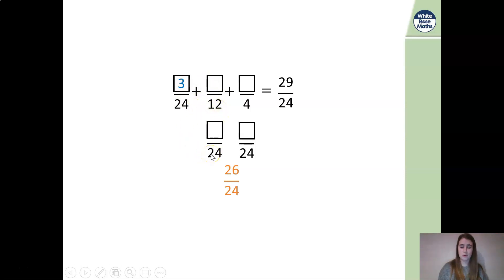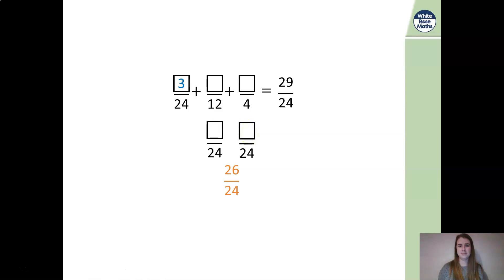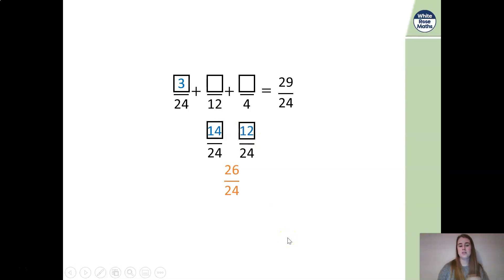So, to get from twelve to twenty-four, we multiplied it by two, so it's got to be divisible by two. This one — we went from four to twenty-four, we multiplied it by six, so this number here has got to be divisible by six. I need two numbers: one that's going to be in the six times tables and one that's going to be in the two times tables. I know this one can be six, twelve, or eighteen. If I had six, that could leave twenty. If I had twelve, that would leave fourteen. If I had eighteen, that would leave eight. I'm going to pick twelve and fourteen, because I know that fourteen add twelve gives me twenty-six.